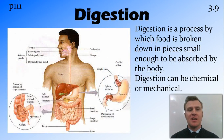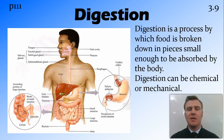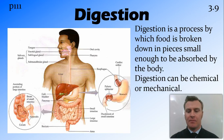Digestion happens in the digestive system and it is the process by which food we eat goes from outside our bodies, being broken down into pieces small enough to be absorbed and taken into our bloodstream. This digestion happens both chemically and mechanically.